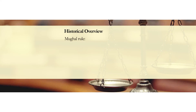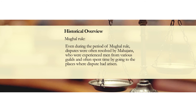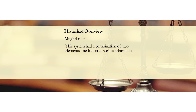During the Mughal period, disputes were often resolved by Mahajans, who were experienced men from various skills and often traveled to places where disputes had arisen. They were the first known people to provide justice at the doorstep of the people. Their system had a combination of two elements: mediation as well as arbitration. The Mahajan tried to resolve the dispute and see if the parties could reach common ground. If not, the Mahajan was empowered to pass an order based on principles of justice, equity, and good conscience.